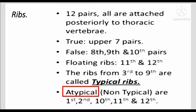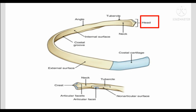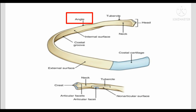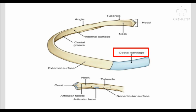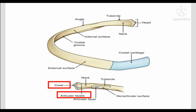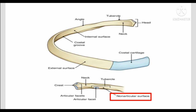This is the head of the rib, this is the tubercle, this is the neck, this is the angle, this is the internal surface, this is the costal groove, this is the external surface, and this is the costal cartilage. The head consists of a crest and articular facet, and this is the non-articular surface.